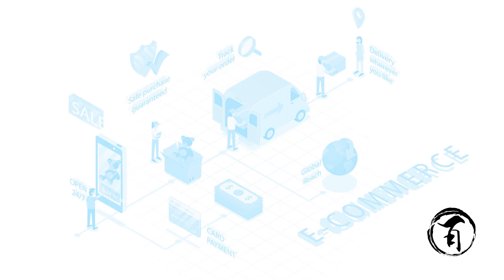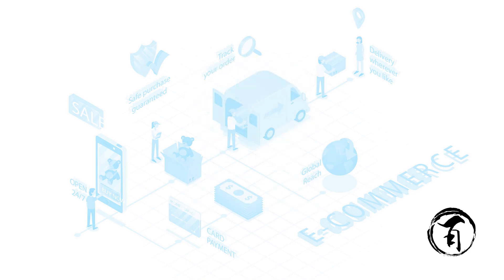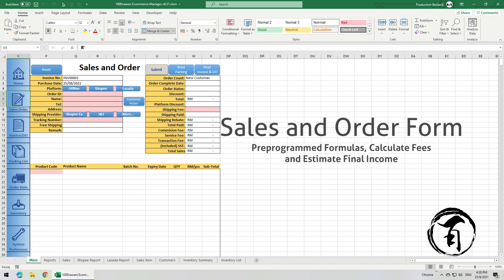Greetings and welcome to 100 Drawers eCommerce Manager video. 100 Drawers eCommerce Manager is an Excel spreadsheet with macros enabled, which means it is programmed so that the spreadsheet could automate the data and make managing orders from eCommerce platforms a much easier task.